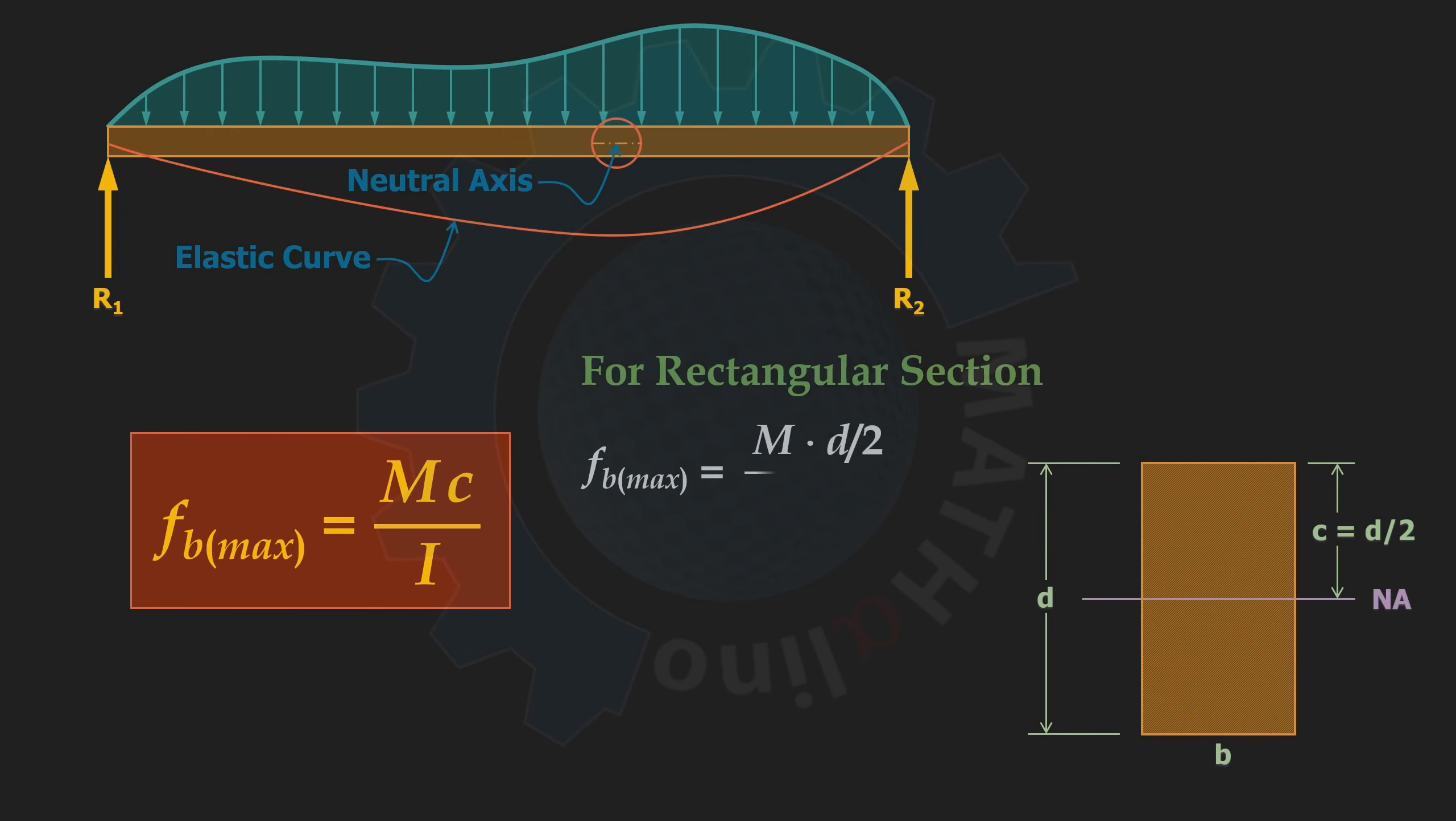That is the moment of inertia for the rectangular section, bd cubed all over 12. And this equation will reduce to 6M all over bd squared.